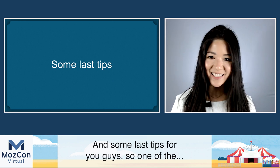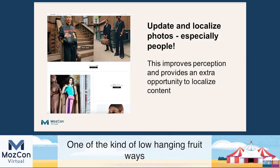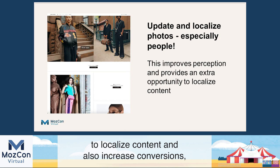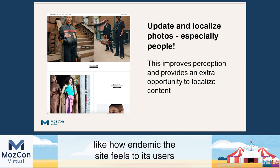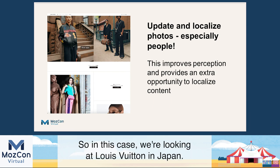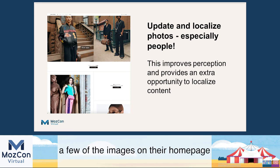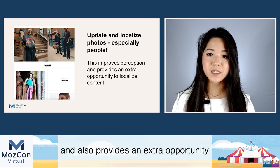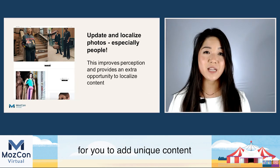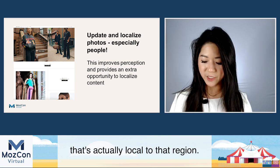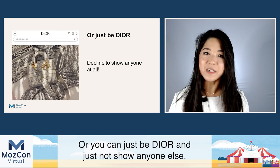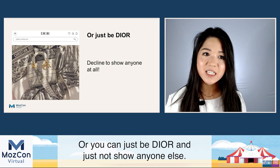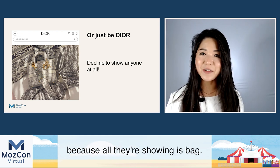Some last tips. One low-hanging-fruit way to localize content and increase conversions is to actually update the photos, especially if they're photos of people. Looking at Louis Vuitton in Japan, you can see they've updated a few of the images on their homepage to make it feel more endemic to users. This really helps improve perception and provides an extra opportunity to add unique content that's actually local to that region. Or you can just be Dior and not show anyone — this is Dior in Korea, but that's not a problem because showing nothing is safe.